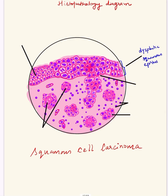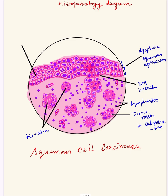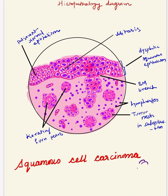For labeling: label the dysplastic squamous epithelium with full-thickness dysplasia, the breach in the basement membrane, lymphocytes infiltrating the tumor, nests of tumor cells in the sub-epithelium or dermis, and keratin pearls — also called horn pearls. Label the adjacent normal epithelium and mitoses shown as loose chromatin threads. This completes the diagram of squamous cell carcinoma of the skin. I hope you find it useful — feedback and comments are welcome in the comment section. Thank you.